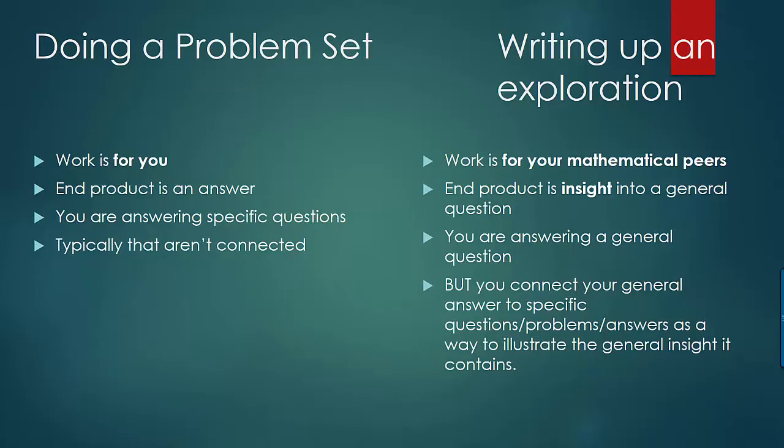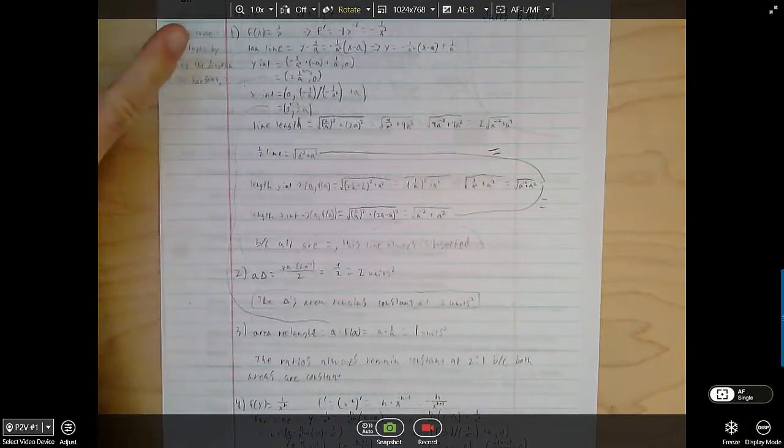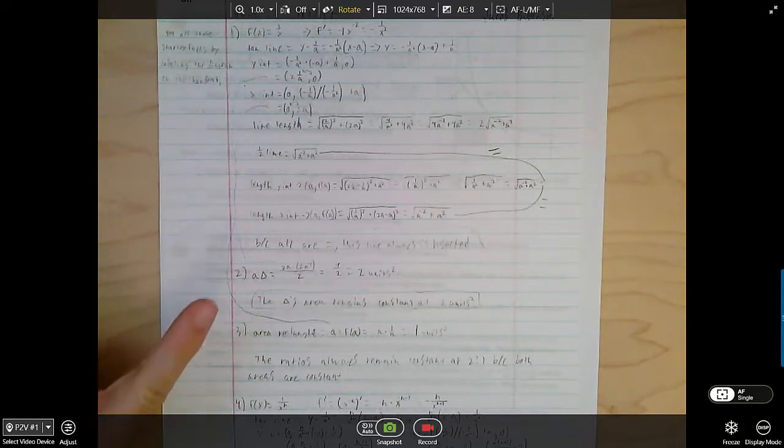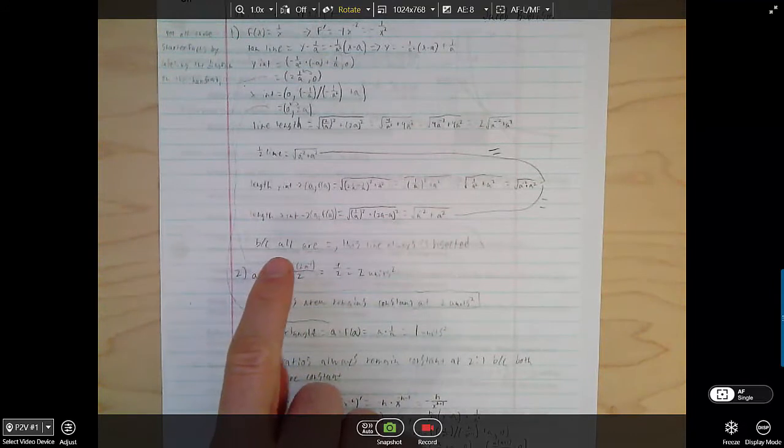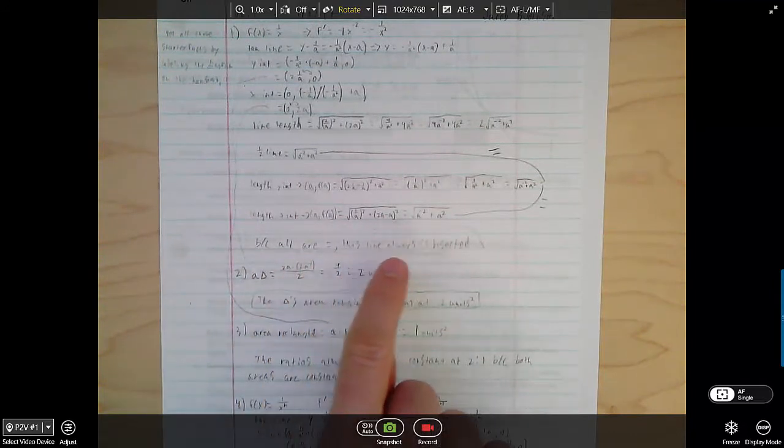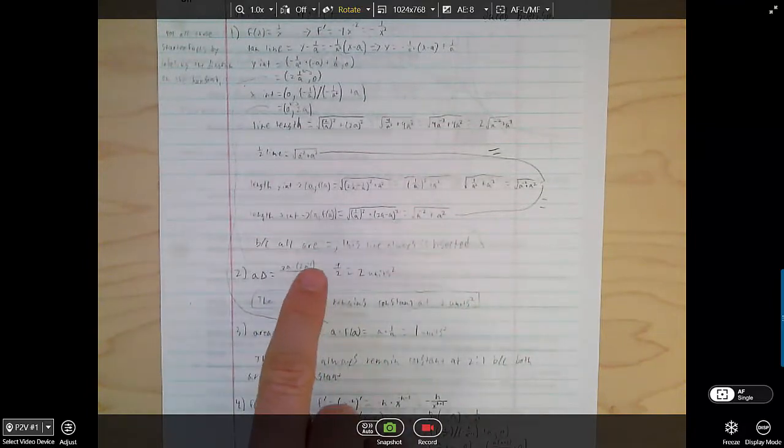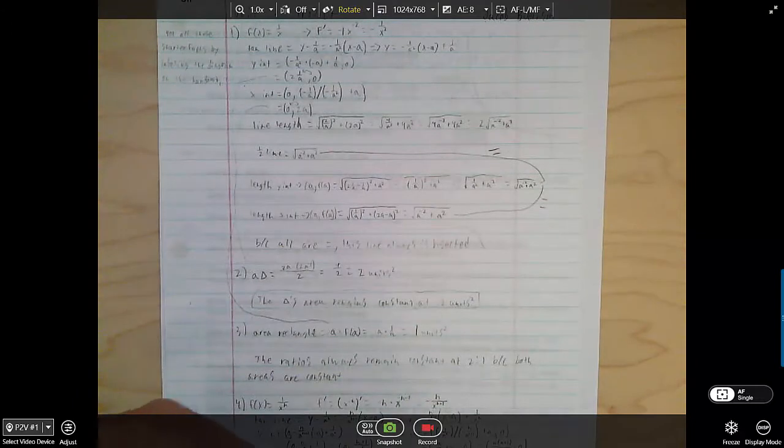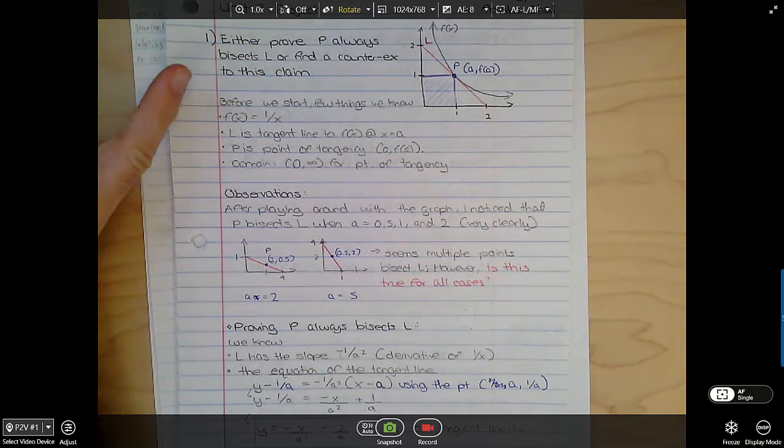I want to show you what that looks like for this particular project you just turned in. This is what it looks like to do the work correctly as if it were a problem set. See how it just says one and then just launches right in f of x equals blah and like blah blah blah and then at the end that's the answer. Nobody else would want to read this.